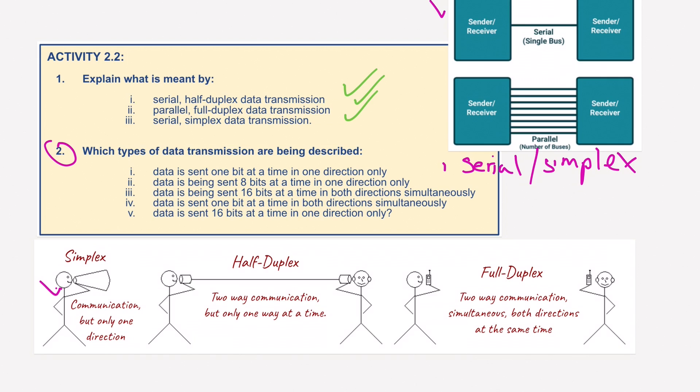Question two, data is sent eight bits at a time, but again, only in one direction. So question two, we must be using parallel this time, parallel, and again, as before, simplex.